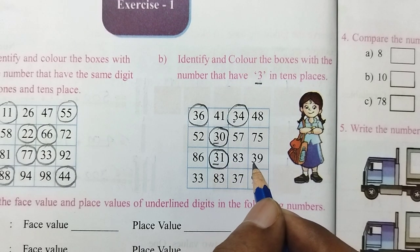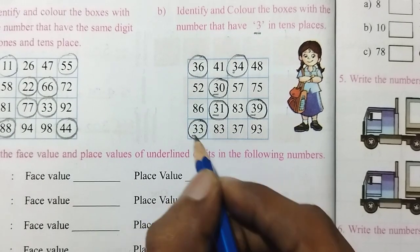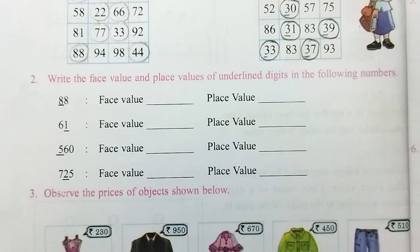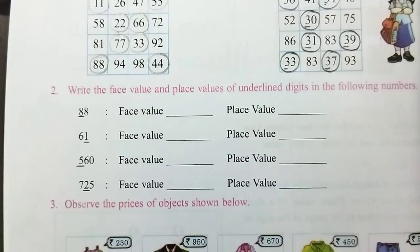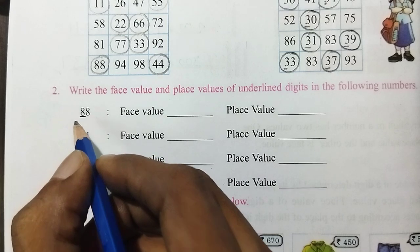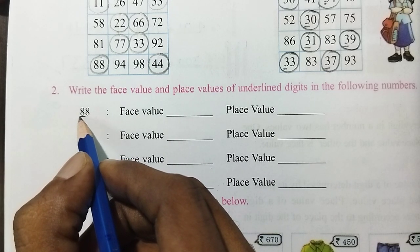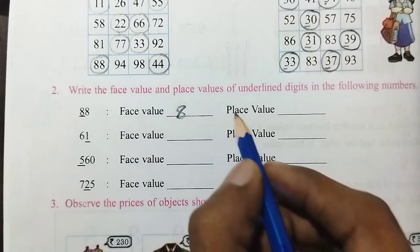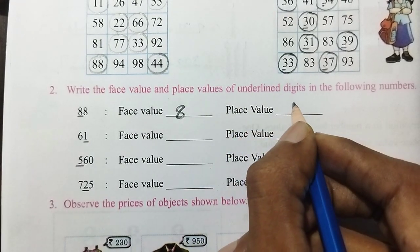1s place is 3. 1s place is 3. Next, 1s place is 3. 2nd place is 2. Next is 2. Next is 6. Next is 6. Next is 7. Next is 8.